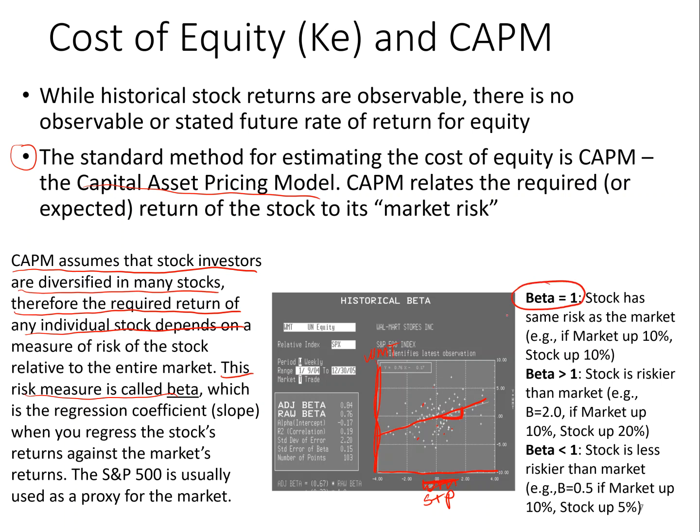If beta is equal to one — the slope equals one — the stock has the same risk as the market. If the stock market were up 10% this month and the beta is one, you would predict the stock is up 10%. If beta is greater than one, say beta equals two, that means when the market is up 10%, your stock will tend to be up 20%, and if the market is down 10%, your stock would tend to be down 20%.